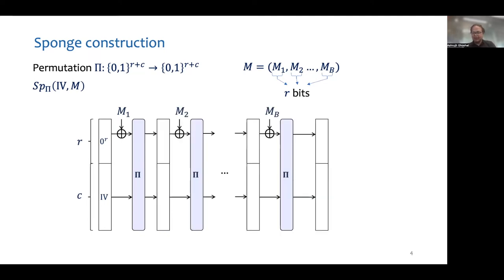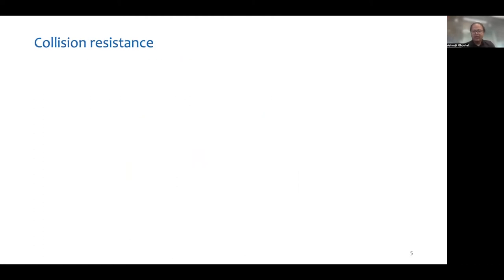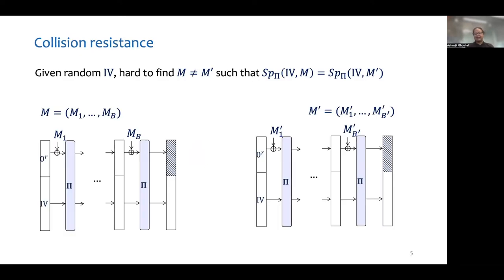This is done till all the message blocks are consumed, and the first r bits of the final state is the hash output. One of the most basic properties that any hash function should satisfy is collision resistance. It requires that given a random IV, it is hard to find two different messages that hash to the same value.